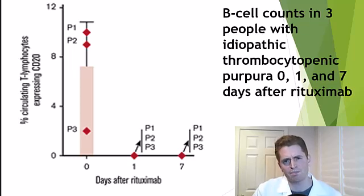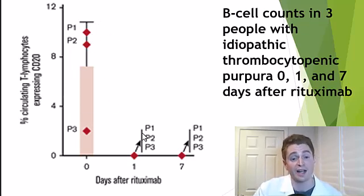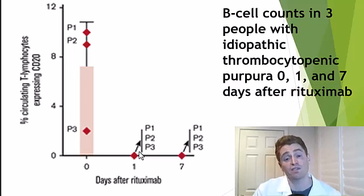I'll show you some examples of B cell counts in different research studies. This is a study on idiopathic thrombocytopenic purpura. This is an autoimmune disease that causes low platelets and bleeding. And there are three individuals, patient one, two, and three. And you can see their levels of CD20 cells prior to treatment. And even one day after rituximab, the levels are very low in all of them, basically undetectable because these drugs work instantly, even within hours.